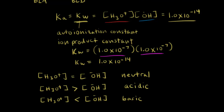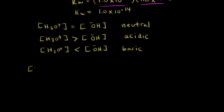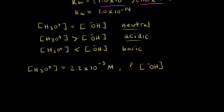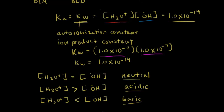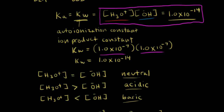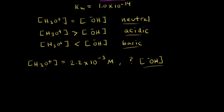Let's do a problem. Let's say we have some lemon juice, and the concentration of hydronium ions has been measured experimentally to be 2.2×10⁻³ M. We're asked to find the concentration of hydroxide anions and classify the solution as neutral, acidic, or basic. We can find the concentration of hydroxide anions using our equation: the concentration of hydronium ions times the concentration of hydroxide anions equals Kw, which is 1.0×10⁻¹⁴.